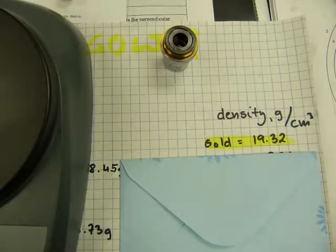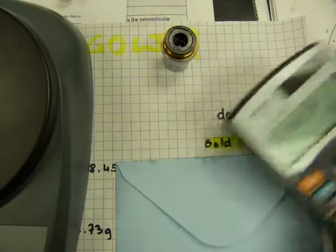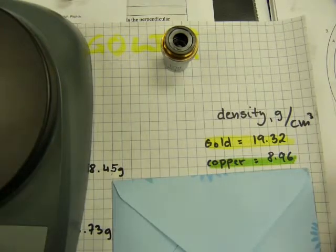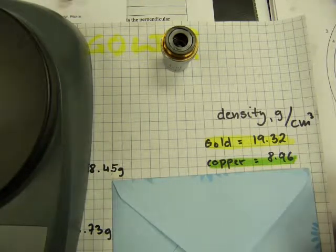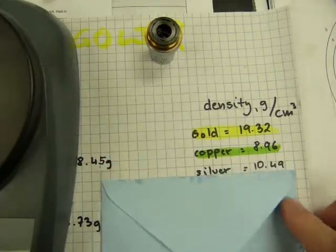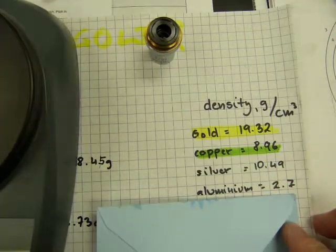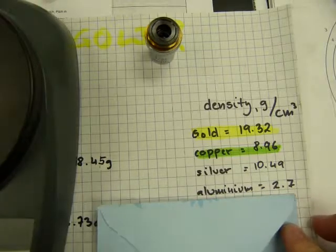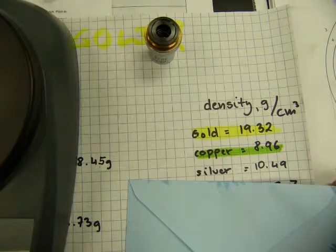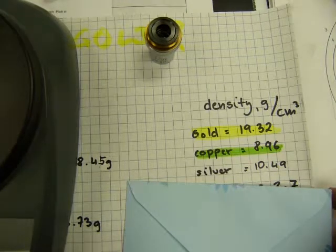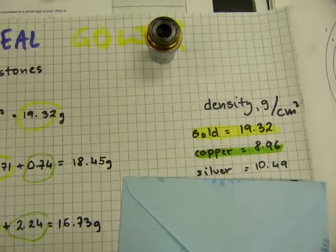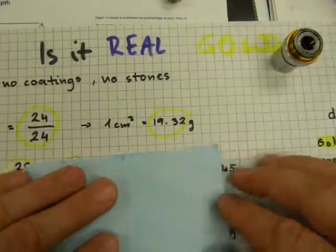Grandma's ring was 10.2, so it's not pure gold for sure. Copper has a density 8.96. Grandma's ring heavier than pure copper. I have silver 10.49. And aluminum is 2.70. Aluminum or aluminium is an alloy of things.